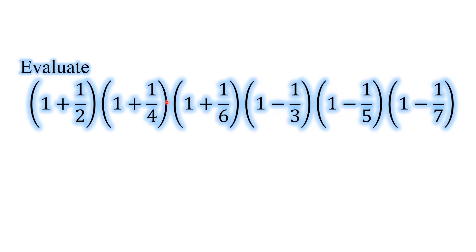Here is our featured problem for week number 2 of Math Calendar, Operations on Fractions. Evaluate the quantity 1 plus 1 half, times the quantity 1 plus 1 fourth, times the quantity 1 plus 1 sixth, times the quantity 1 minus 1 third, times the quantity 1 minus 1 fifth, times the quantity 1 minus 1 seventh.